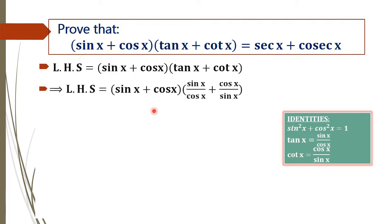Which is equal to (sin x + cos x) into (sin x / cos x + cos x / sin x). That is tan x is rearranged as sin x / cos x and cot x as cos x / sin x. In the next step we are going to take the LCM.